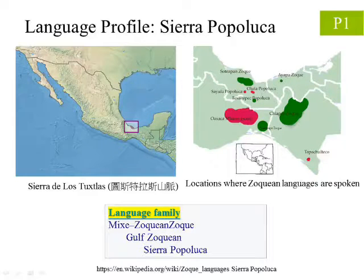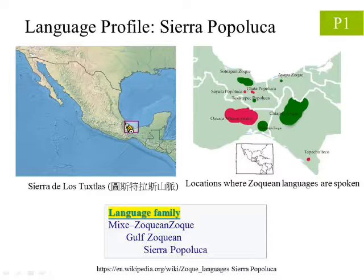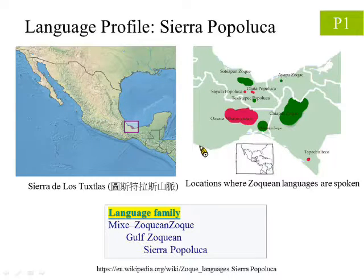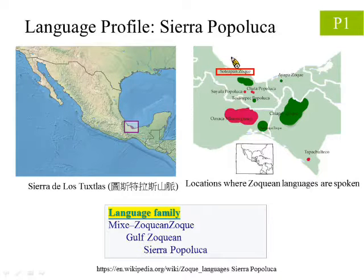Before we start, let us first briefly introduce the Sierra Pepluca language. The users of the language are mostly located in Sierra de los Tactalos, a mountain range in Mexico. The picture on the left shows this area on the Mexican map. The picture on the right is the region enlarged, and the areas marked in red and green are locations where the Zoccan languages are spoken. In particular, we have circled Sotiap and Zoc in red, for this is the area where the Sierra Pepluca language is spoken.